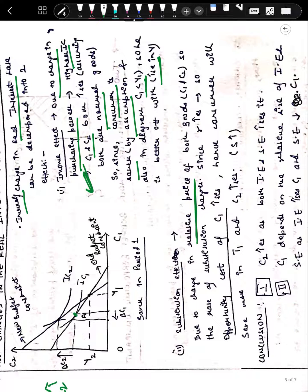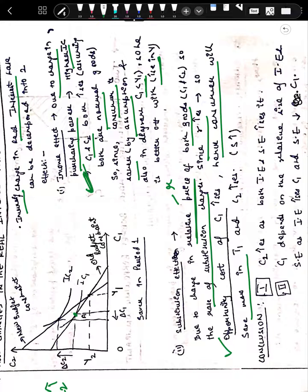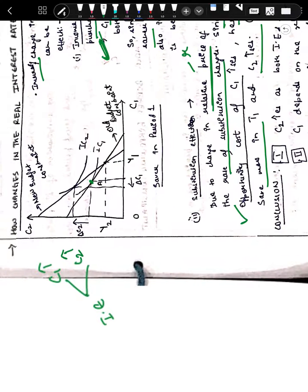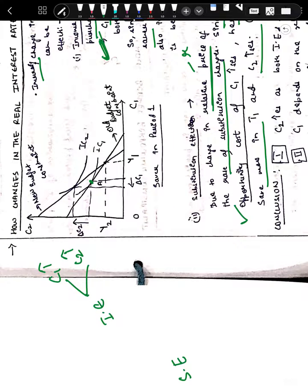The substitution effect is due to a change in the relative price of both goods — here the relative price is the real interest rate, the rate of substitution. Since the interest rate increases, the opportunity cost of consumption in time period one increases, and hence the consumer saves more in time period one. Substitution effect says that as the real interest rate increases, consumption in time period two increases while saving more in period one.